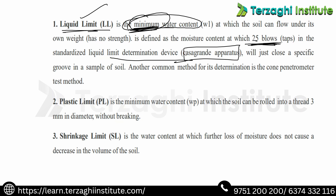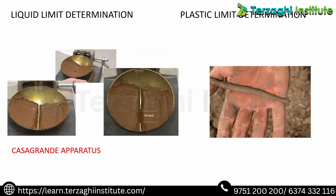That device is the Casagrande apparatus. So liquid limit is the minimum water content at which soil flows under its own weight. Next is plastic limit — the minimum water content at which soil can be rolled into threads of 3mm diameter.